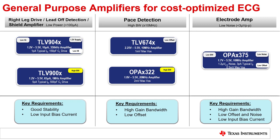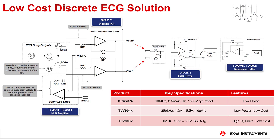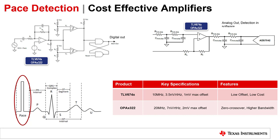This slide shows a top-level overview of an ECG signal chain built using GP amp devices. With a low power TLV9041/TLV9001 used for right leg drive applications, the OPA2375 with its high gain bandwidth can also be an excellent SAR driver. Pace detection can be done with or without a software algorithm. In one implementation, the signal is high-pass filtered and gained up using TLV674X and OPAX322, then compared to a reference using a window comparator and latched. In another implementation, the signal is gained up and fed into the ADC, where pace detection is done in the digital domain using an algorithm.